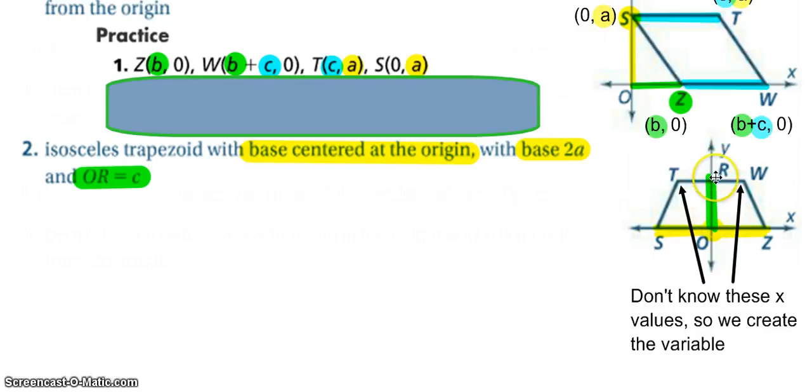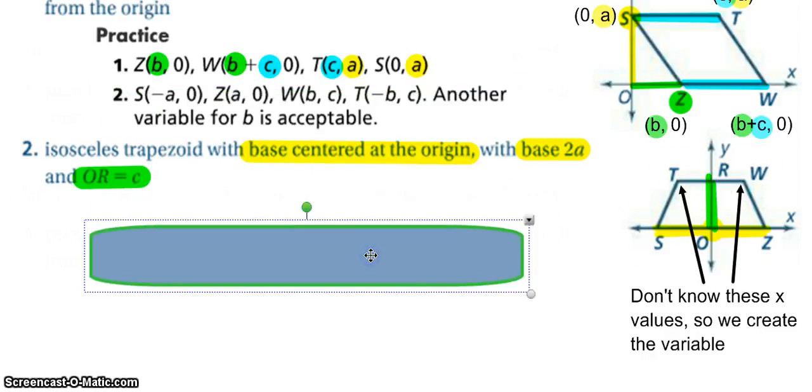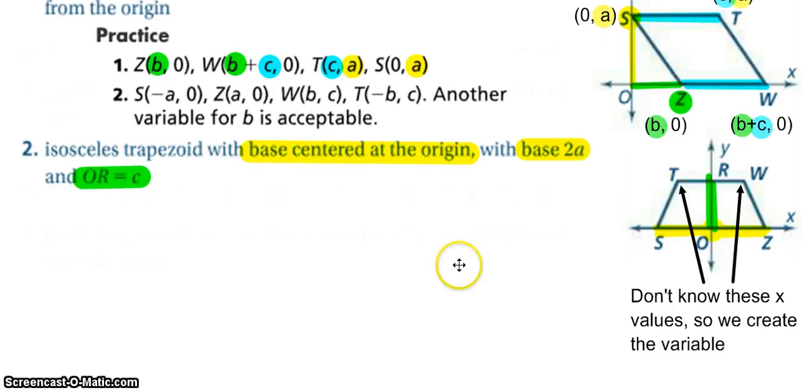And then OR is a length of C, so R has a Y value of C with an X value of zero. And since we don't know T or W's distance away from the Y axis we can invent that and we just call that a length of B.